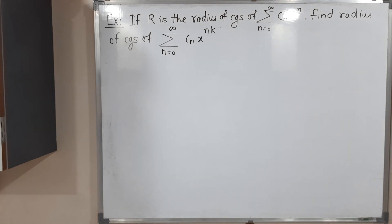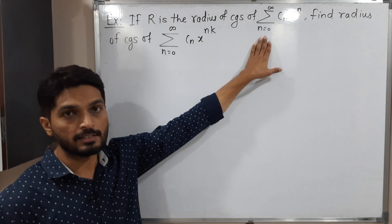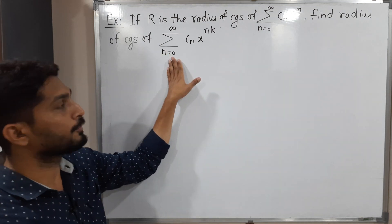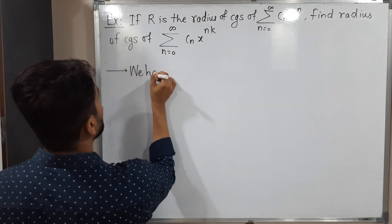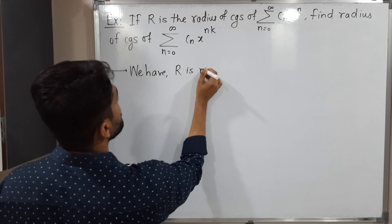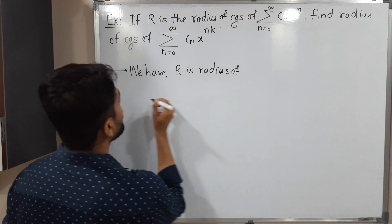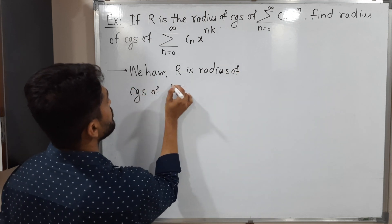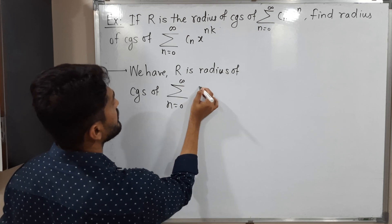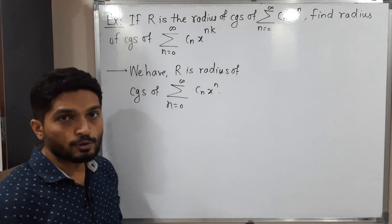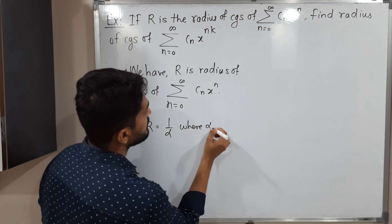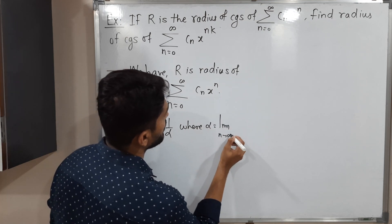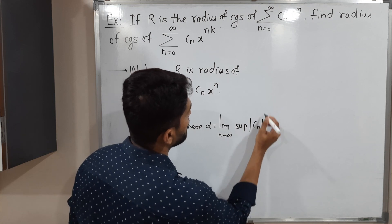For the second example, they have given the same information: R is the radius of convergence of the standard power series. We have to find the radius of convergence of a different power series. We have R as the radius of convergence of summation n from 0 to infinity, cₙ x raised to n. By formula, R equals 1 by alpha, where alpha equals limit n tends to infinity, supremum of mod cₙ raised to 1 by n.